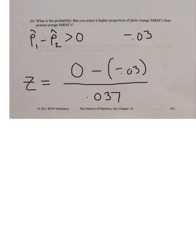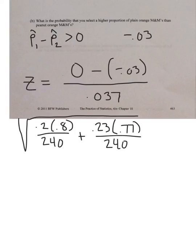In fact, maybe I should write that down. We're still using this standard deviation because it's not a significance test, it's just a probability. So that is where we get the 0.037. So a negative and a negative is a positive. We're going to divide those two: 0.03 divided by 0.037, and we get 0.81. That's our z-score. So what do we do with that?